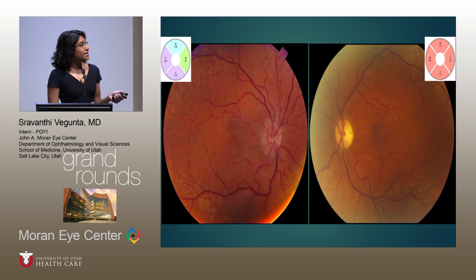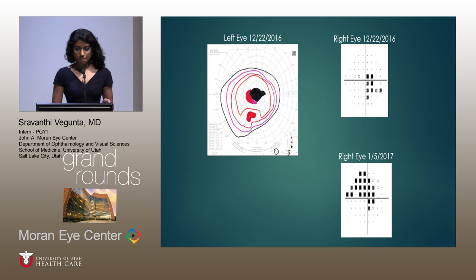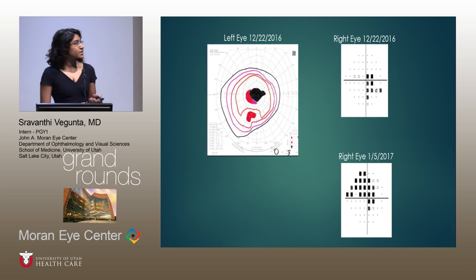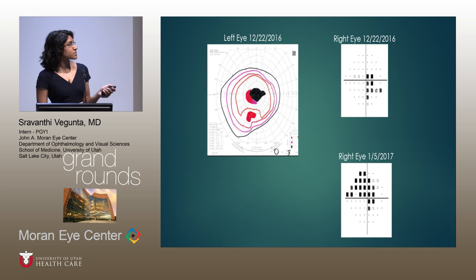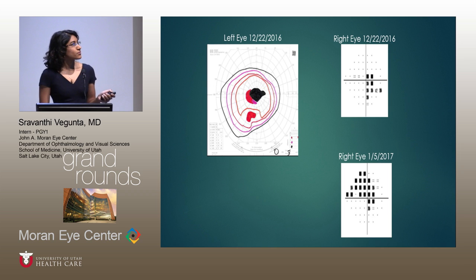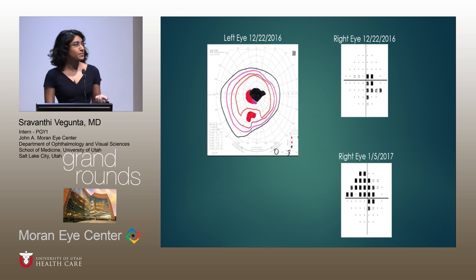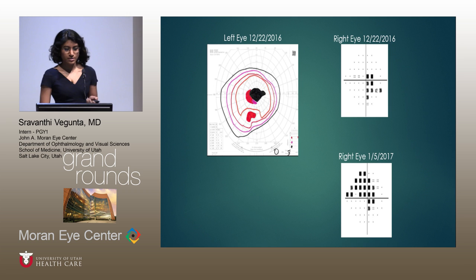She had a macular hole and both maculae showed RPE changes. On visual field testing, her Goldmann visual field of the left eye, which was chronically affected, showed a cecocentral scotoma and an inferior scotoma. On right eye Humphrey visual field she had a cecocentral scotoma. Two weeks later when she came back for follow-up, her visual field had progressed to include a superior altitudinal defect as well.